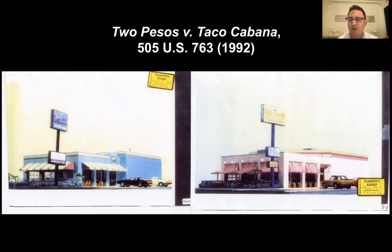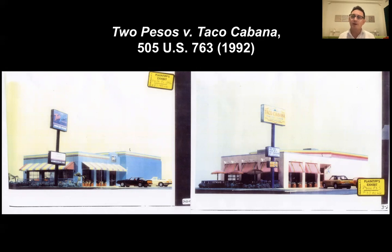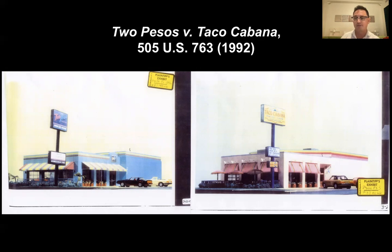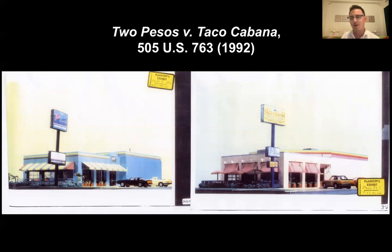Eventually, Taco Cabana moved into the Two Pesos business area and brought a trade dress infringement action against Two Pesos. Taco Cabana's argument was that they were first on the market with the particular appearance of their Tex-Mex restaurant — they had the senior trade dress — and that Two Pesos's trade dress was sufficiently similar to be confusing to consumers. The jury ultimately determined that the Taco Cabana trade dress was inherently distinctive, but had not acquired secondary meaning.